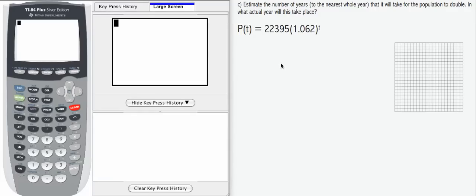Continuing our example, in Part C, we're asked to estimate the number of years to the nearest whole that it will take for the population to double. In what actual year will this take place?